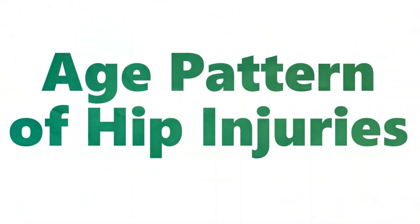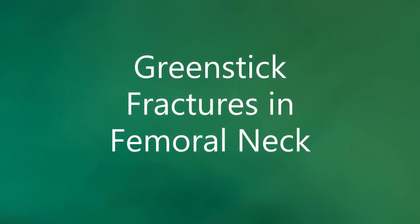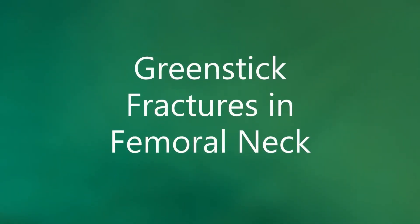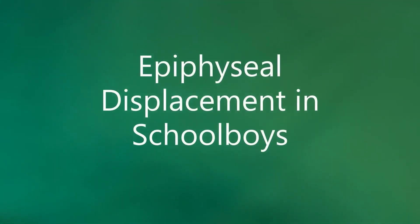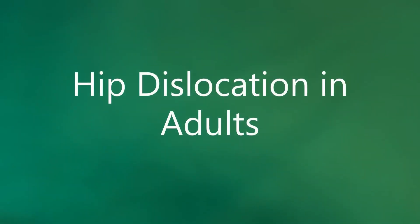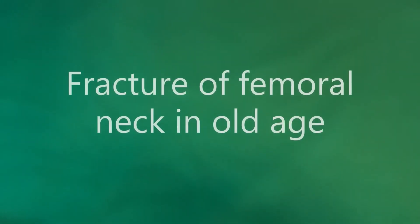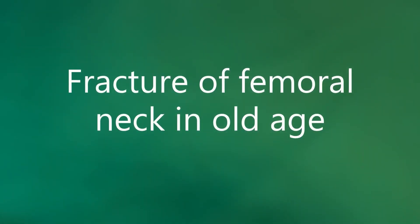There is a curious age pattern of hip injuries. Children may sustain greenstick fractures of the femoral neck. School boys may displace the epiphysis of the femoral head. In adult life, the hip dislocates, and in old age, fracture of the neck of the femur again becomes the usual lesion.